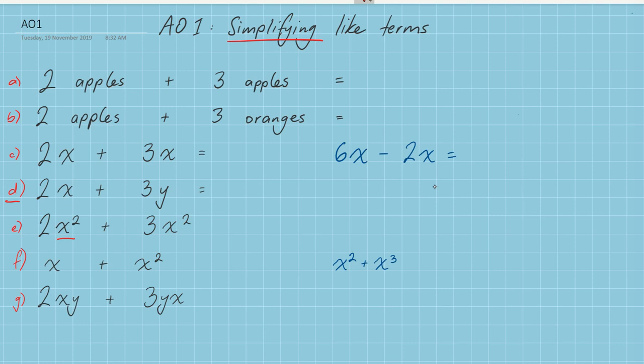And when we're talking about like terms, we're talking about unknown values that are the same. So we're talking about unknowns like X and Y. When we talk about like terms, they have to be the same. X and Y are not like terms, or what we call unlike terms.